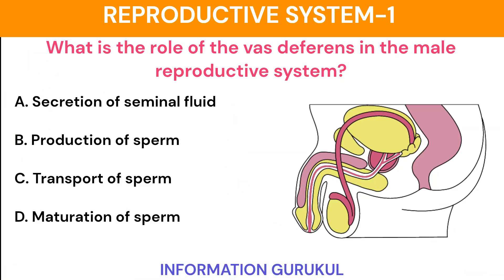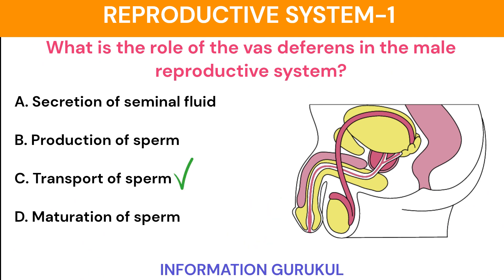What is the role of the vas deferens in the male reproductive system? Transport of sperm.